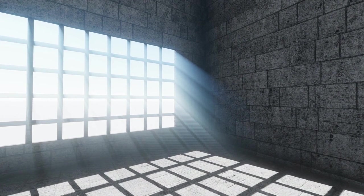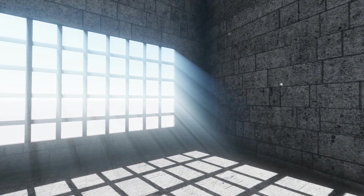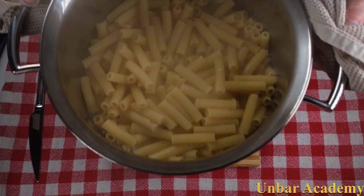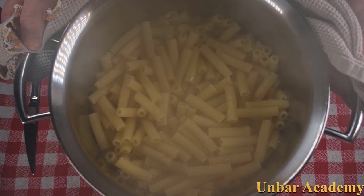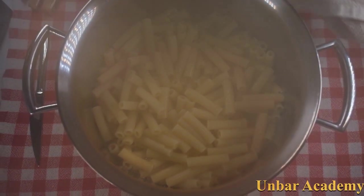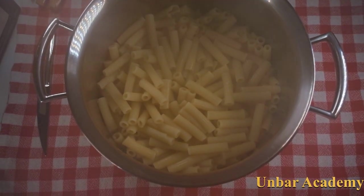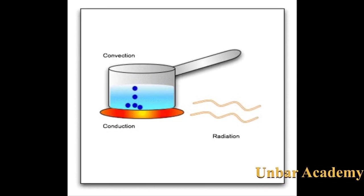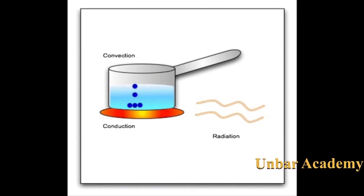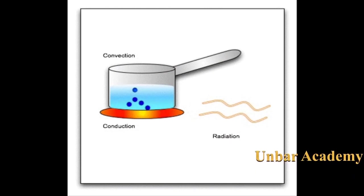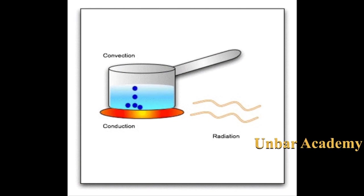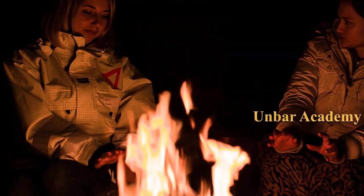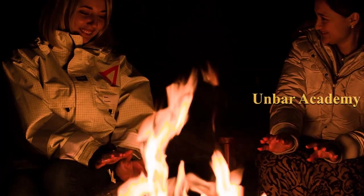When we heat water in a room, the heat flows through the hands of the dish to the person's hand by conduction. The heat flows through the boiling water by convection. The heat transfers to the environment by radiation.